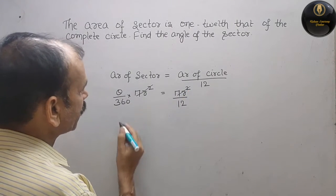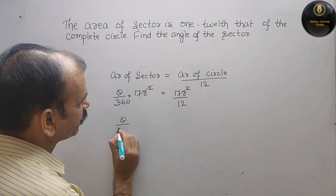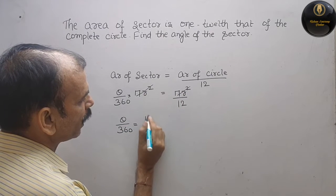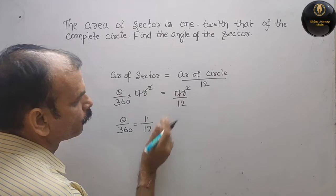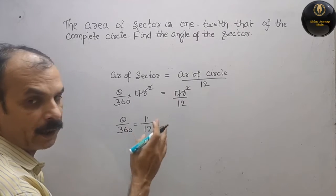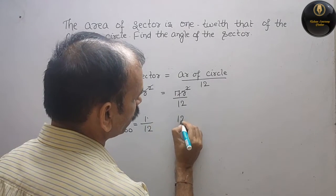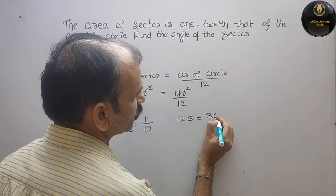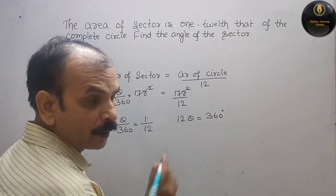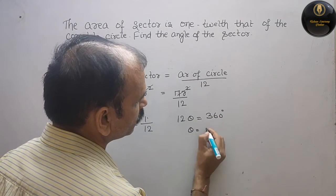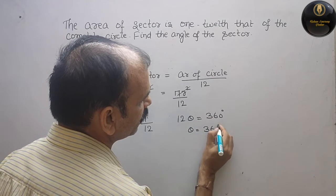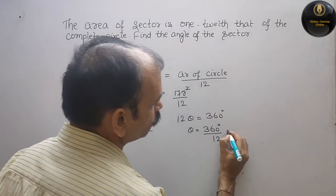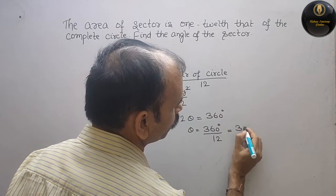So you can see theta by 360 is equal to 1 by 12. Cross multiply: 12 theta equals 360 degrees. Therefore theta equals 360 divided by 12, which gives us 30 degrees.